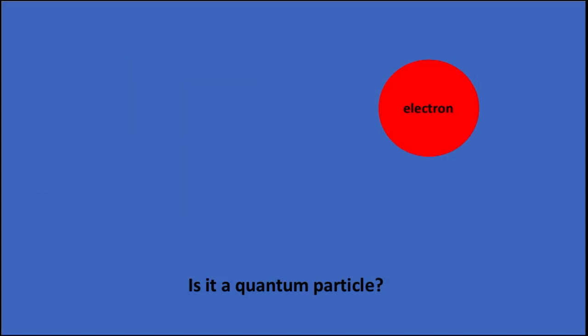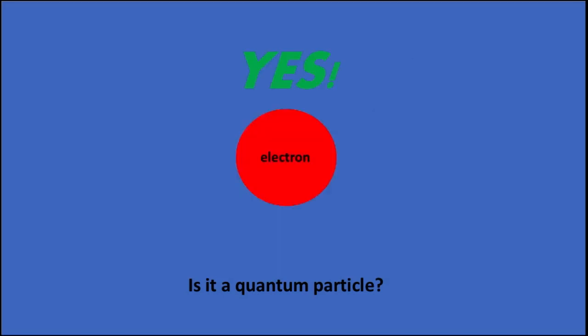However, this electron tells a different story. Electrons are not able to be divided any further than their original state. This makes it a quantum particle, meaning it abides by the laws of quantum physics rather than the laws of classical physics. Now that we know what a quantum particle is, let's talk about what makes them special. Quantum particles are able to do things within their own quantum realm that would be seen as impossible in our realm of classical physics.